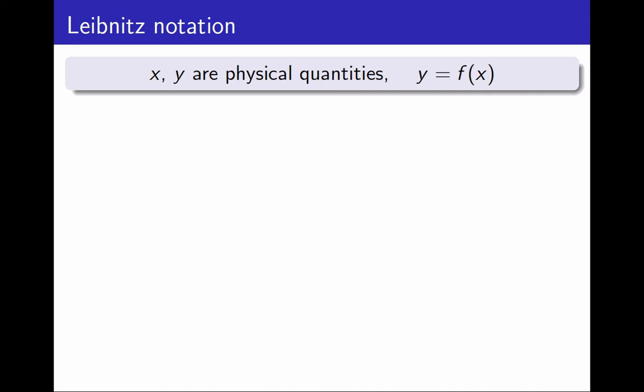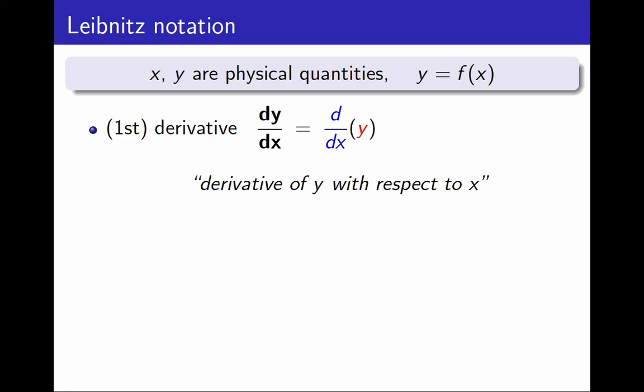Then, as you know, we can write the first derivative of this function as dy over dx. Remember, this does not mean that dy is a number and dx is a number and I divide them. Rather, here is how to interpret it. Start with the physical quantity y, and apply the operator d over dx to it. d over dx means take the derivative with respect to x, and it is an operation. When applied to the physical quantity y, it produces a new physical quantity dy over dx. And we call this the derivative of y with respect to x.